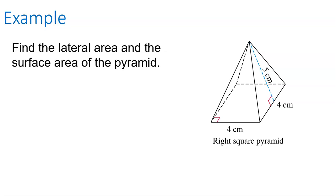Here is a right square pyramid. The square is the base and the triangles are the faces. I want to find the lateral area and total surface area. If it were sitting on the ground and I wanted to paint it and it would stay on the ground, I wouldn't paint underneath it — I'd only paint the lateral surface.